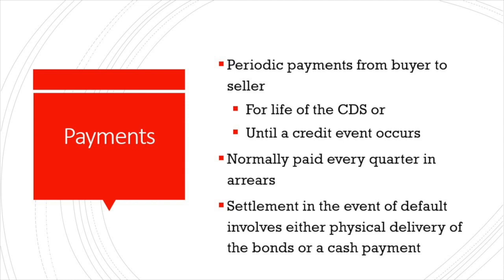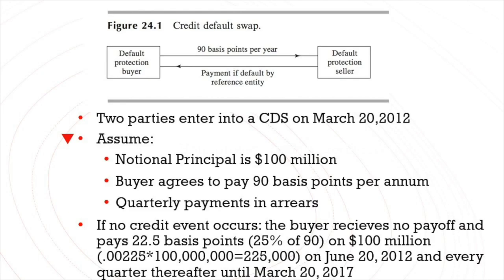Settlement in the event of default involves either physical delivery of the bonds or a cash payment. For example, two parties enter into a CDS on March 20th, 2012. We assume the notional principal is $100 million, the buyer agrees to pay 90 basis points per annum, and there are quarterly payments. If no credit event occurs, the buyer receives no payoff and pays 22.5 basis points — which is 25% of 90 — on $100 million. That is 0.00225 times $100 million, equal to $225,000, paid on June 20th, 2012, and every quarter thereafter until March 20th, 2017.